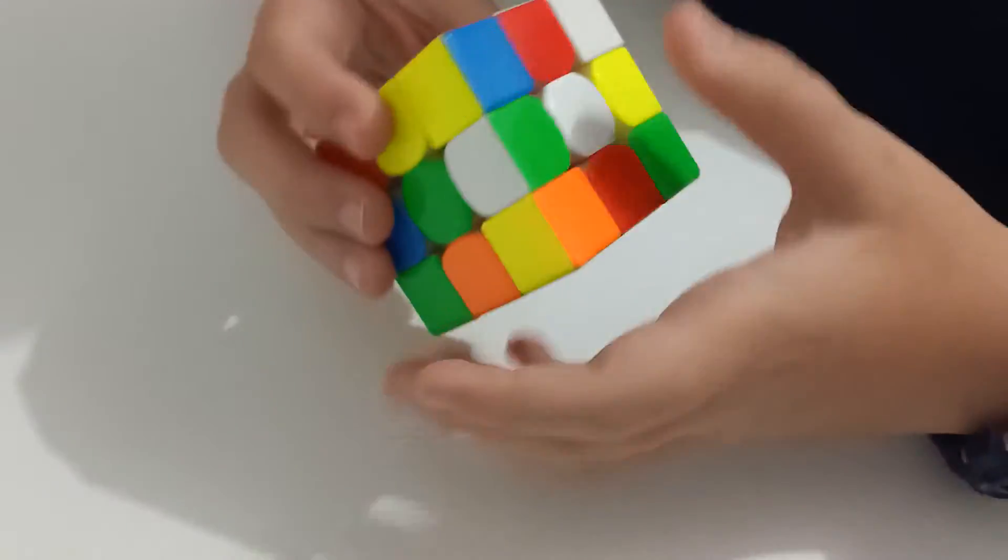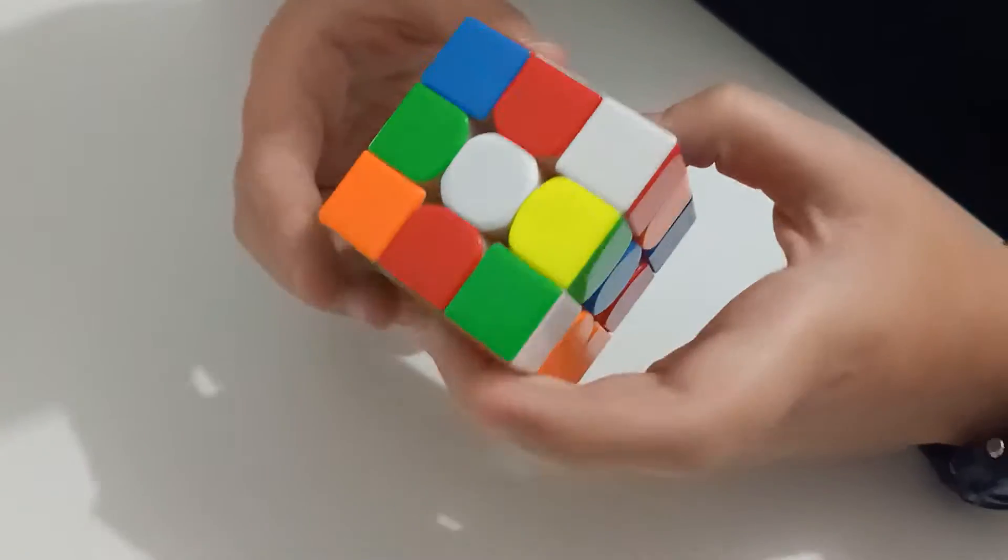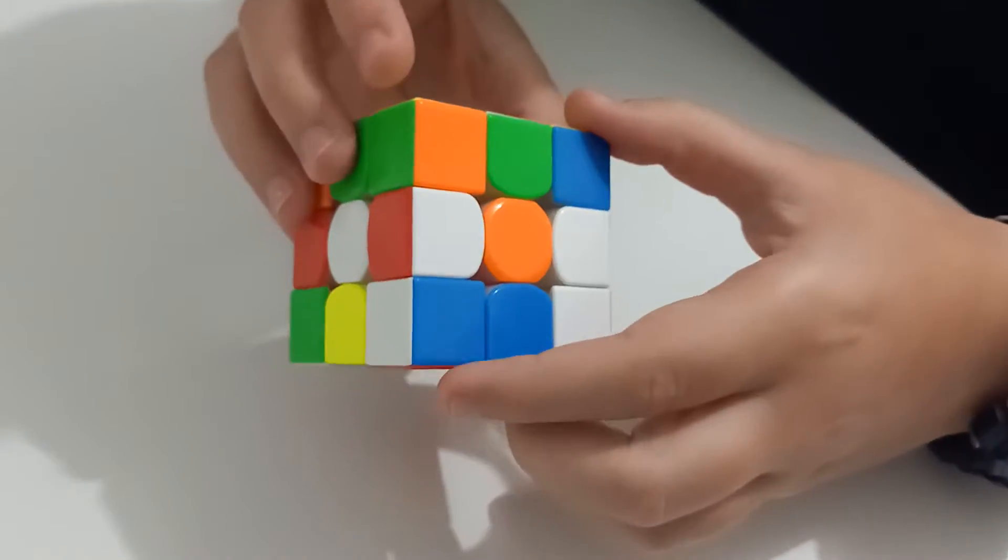Hi, this is a beginner Rubik's Cube solver. How do I solve this?